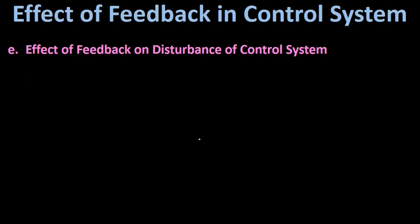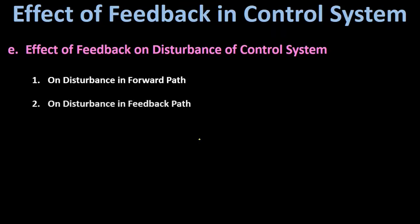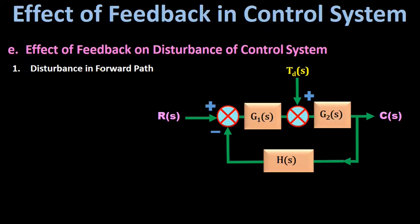Therefore, we will study first the effect of feedback on disturbance in the forward path, then the effect of feedback on disturbance in the feedback path, and lastly the effect of feedback on disturbance at the output of the control system. We will begin with the effect of feedback on disturbance in the forward path.